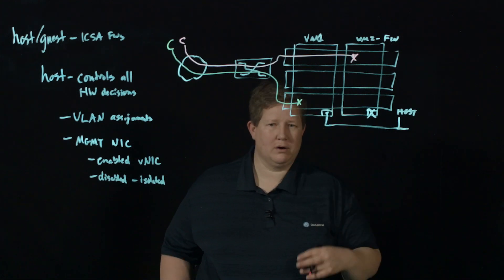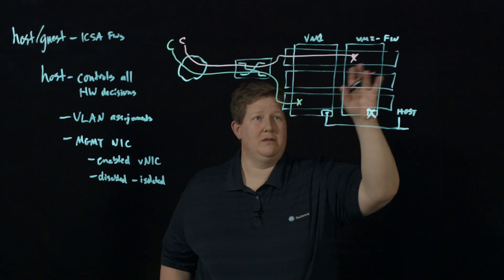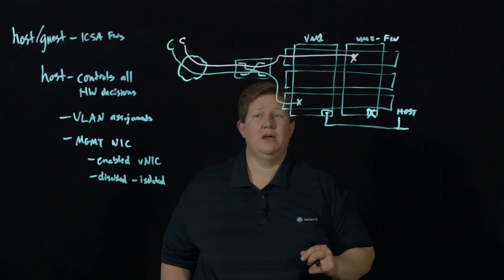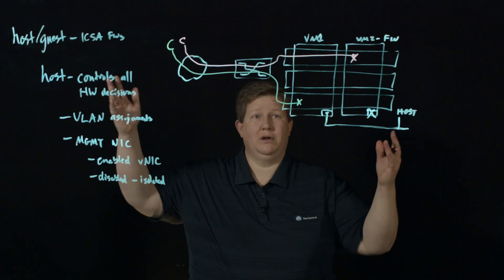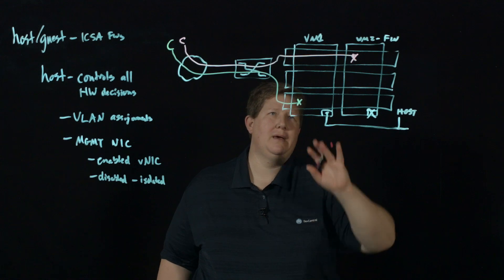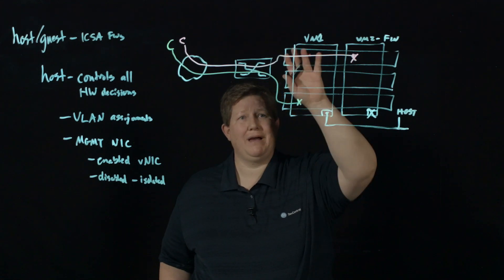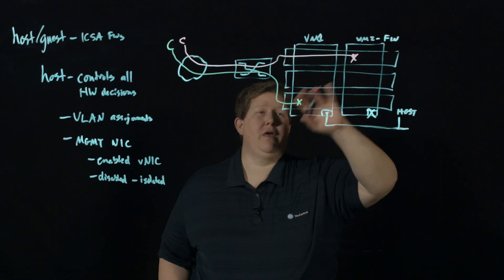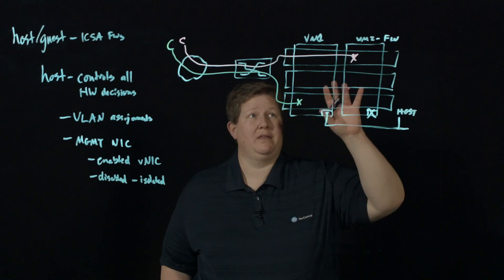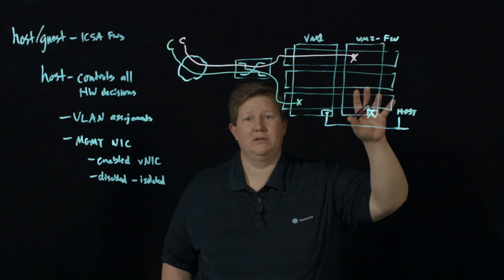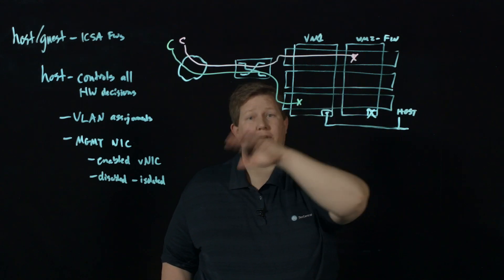So this finance guest is not going to see any of the traffic on the marketing guest and vice versa. So if you activate your TCP dump on either of these, you're not going to see that traffic, unless at the host you're allowing that traffic to see each other. But assuming that we have isolated VLANs at the host level, they won't be able to see that. You cannot at the guest level add those networks.